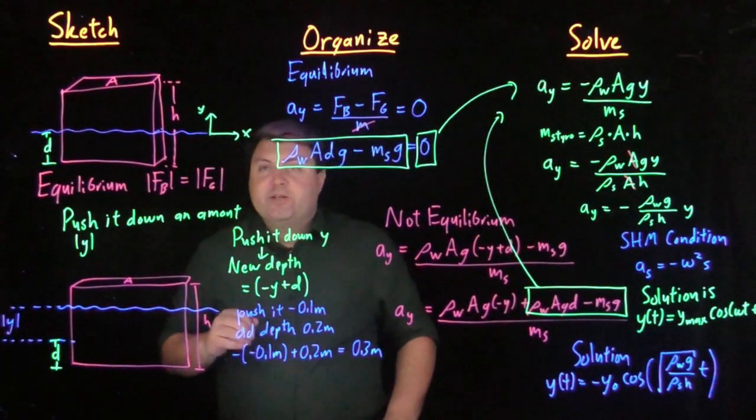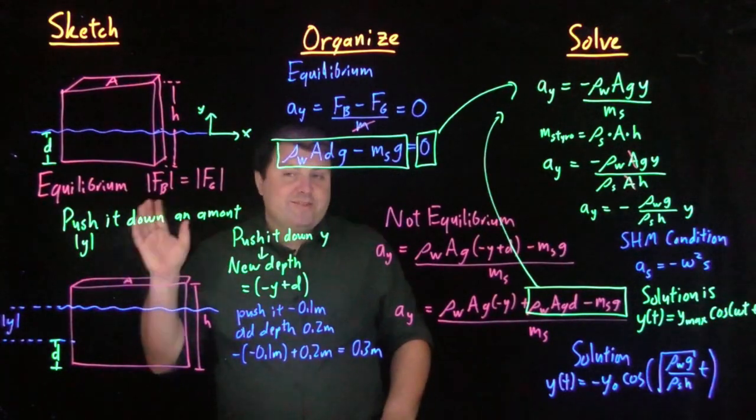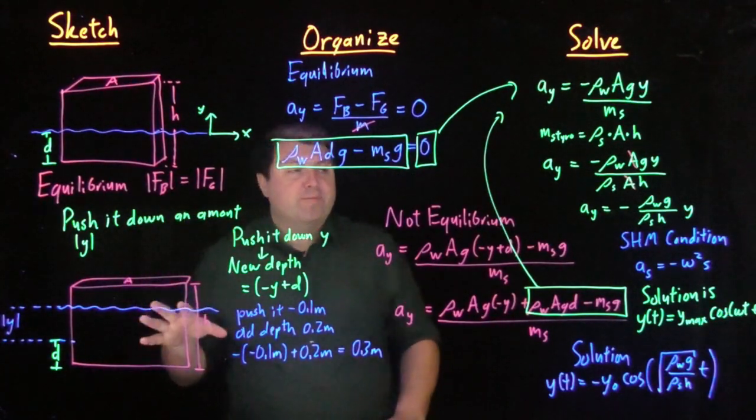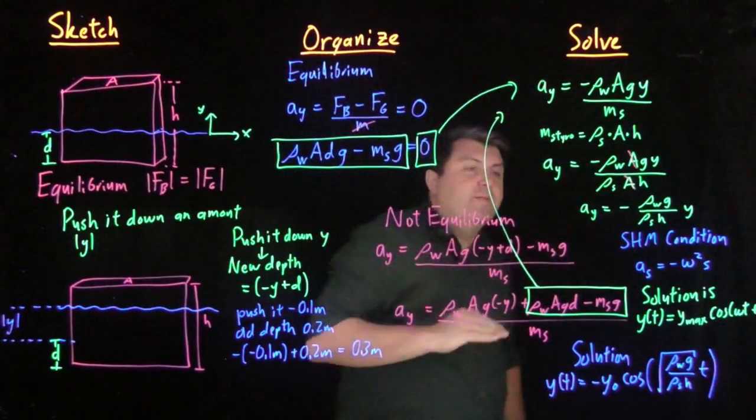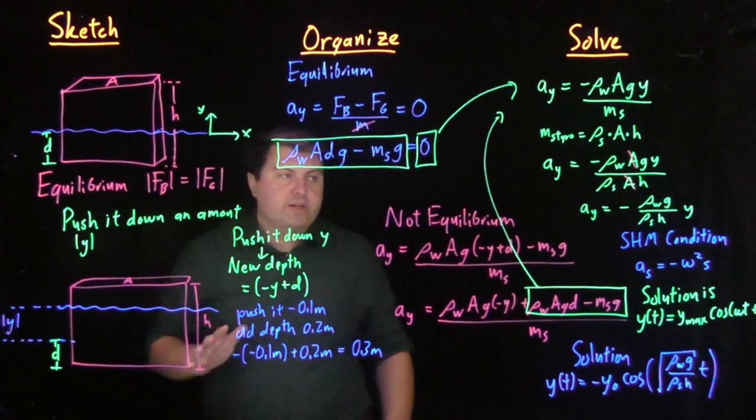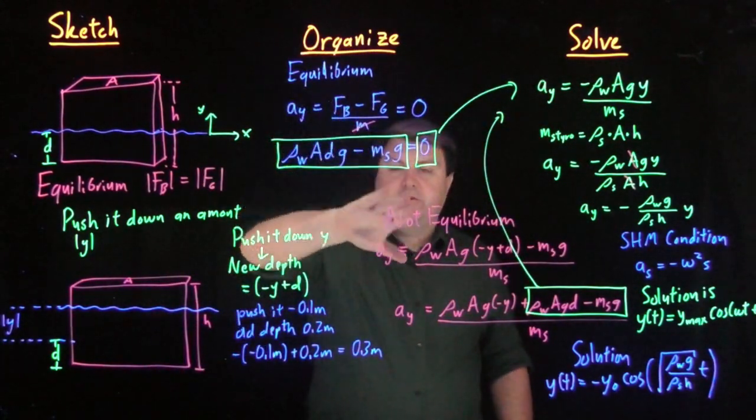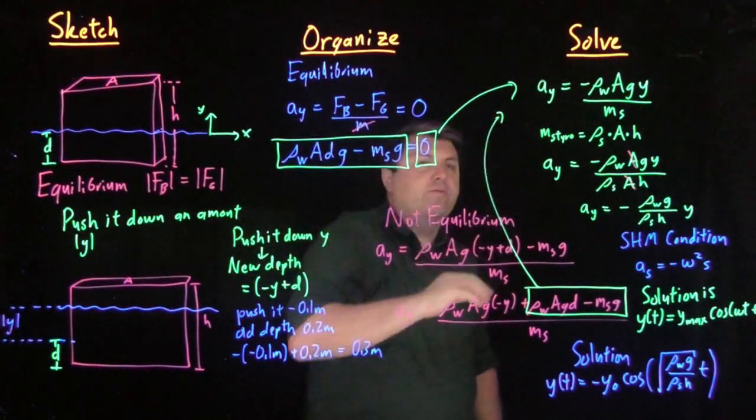So simple harmonic motion is going to come up in a lot of different cases. This was just the week after simple harmonic motion, we've already found a way for buoyancy to provide the simple harmonic motion equation. All that we did was just use our forces and solve for these forces.